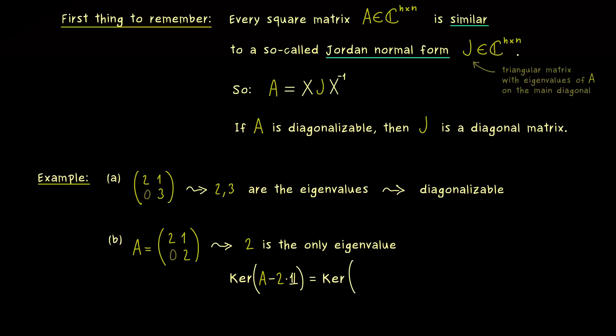Which is quite simple, we have the kernel of the matrix 0, 1, 0, 0. And this matrix is already in the row echelon form with just one pivot. So only one free variable, which implies that the eigenspace is one dimensional.